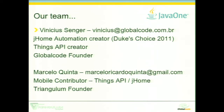This year we are launching a new API called Things API. It's a brand new API for the Internet of Things, supporting Java ME, Java SE, Java EE, Bluetooth, ZigBee, and IP devices. We are a company in Brazil called Global Code — it's a training company. And here is Marcelo. Please introduce yourself, Marcelo.